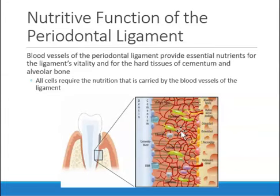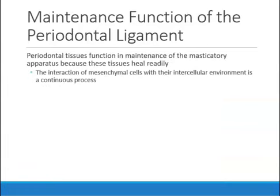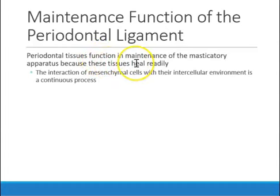The third function is nutritive. The rich blood supply carries nutrients that feed the cementum and bone — without this blood supply, both the cementum and bone would die. The fourth function is maintenance. Because the periodontal ligament is vascular, has neural components, and contains many cells, it is capable of repairing tissues around the teeth when they are injured or dying due to trauma or other causes.